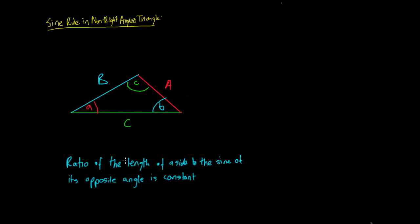So what the sine rule says is that the ratio of the length of a side to the sine of its opposite angle is constant.